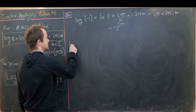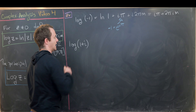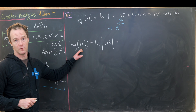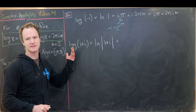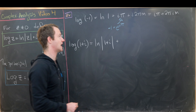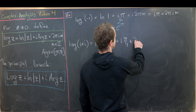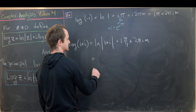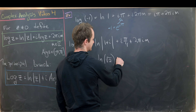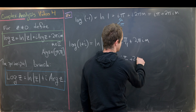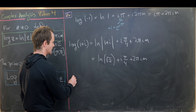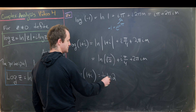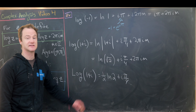Let's compute log(1 plus i). The modulus of 1 plus i is the square root of 2, and its argument is π/4. So log(1 plus i) equals ln(√2) plus i·π/4 plus 2πim. The principal branch — denoted capital Log — takes m equals 0, giving capital Log(1 plus i) equals (1/2)ln(2) plus i·π/4. That's a nice succinct form.